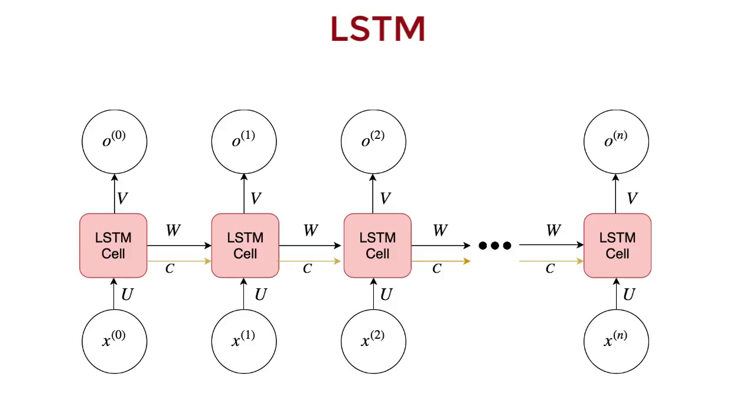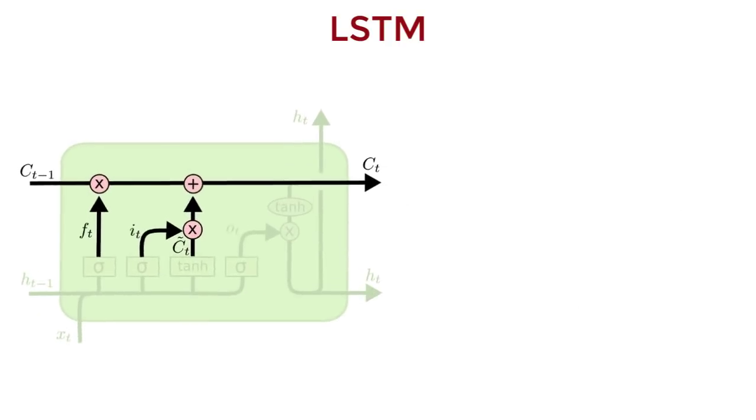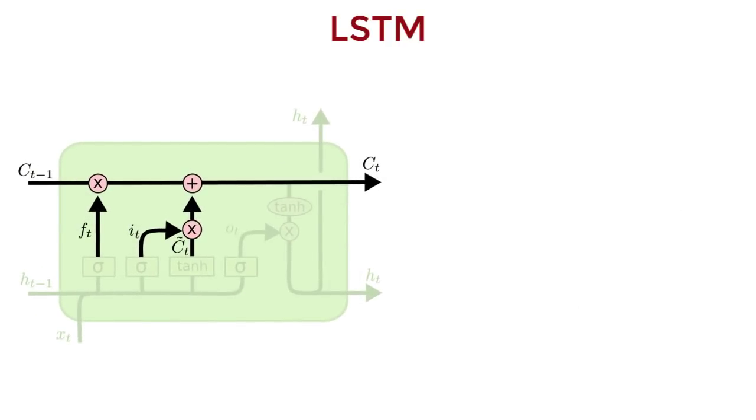LSTMs were designed to mitigate the vanishing and exploding gradient problem. Apart from the hidden state vector, each LSTM cell maintains a cell state vector. And at each time step, the next LSTM can choose to read from it, write to it, or reset the cell using an explicit gating mechanism.